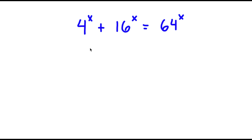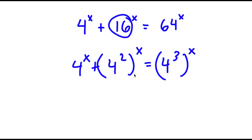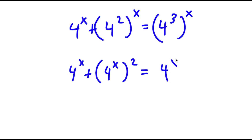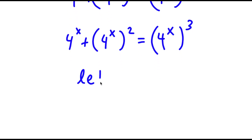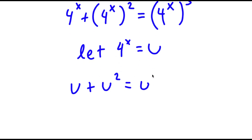In this problem, I have 4 to the power of x plus 16 to the power of x is equal to 64 to the power of x. I can rewrite 16 as 4 squared, so I have 4 to the power of x plus 4 squared to the power of x. And 64 I can rewrite as 4 to the power of 3. Rewriting, I get 4 to the power of x plus 4 to the power of 2x equal to 4 to the power of 3x. Now I'm going to let 4 to the power of x equal the variable u, so I have u plus u squared is equal to u to the power of 3.